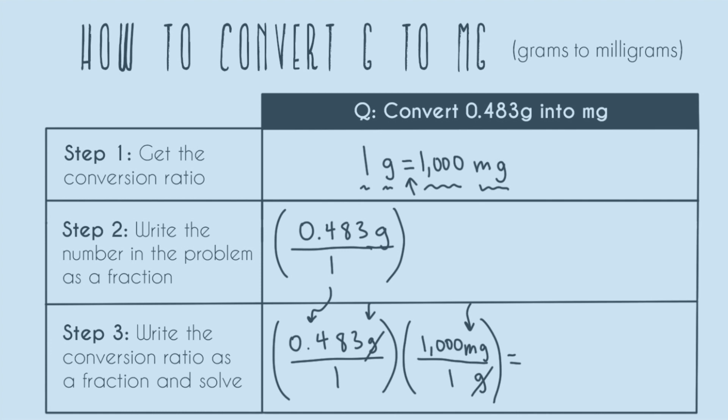And then lastly, we can see the multiplication or division that we have to do either in our calculator, on paper, or in our head. So now we can see that we are multiplying 0.483 times 1,000, and that's going to give us an answer of 483 milligrams.